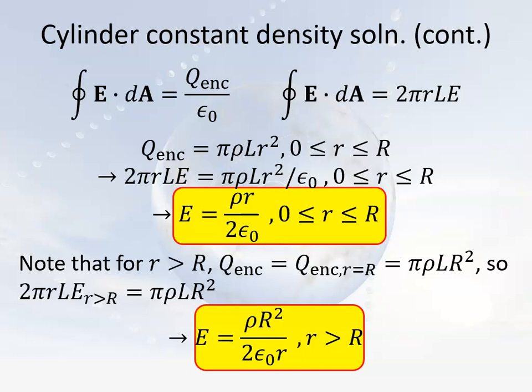We had a situation where we needed to figure out the electric field inside the cylinder by adding up contributions from a bunch of little shells inside our imaginary Gaussian surface, which was also painted inside the cylinder. Now, one more example.